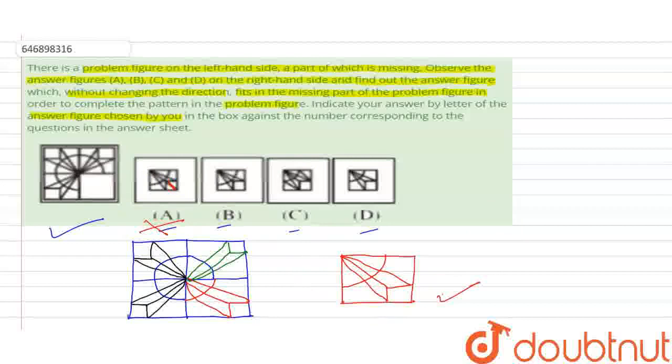Looking at the answer figures: A has a line here but not here, so it's incorrect. B has this line connected incorrectly. C is different, so it's incorrect. D is correct because D is exactly similar. The answer figure D fills and completes the pattern, so the answer is D. This is the answer to your question, thank you.